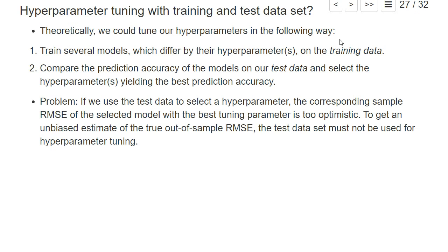Theoretically, we could tune hyperparameters in the following way: we take a grid of possible values of the hyperparameters, we train our model on the training dataset for each value of the hyperparameter, and assess prediction accuracy on the test dataset, and then select the hyperparameter combination that yields the best prediction accuracy — for example, the lowest root mean squared error on the test dataset.